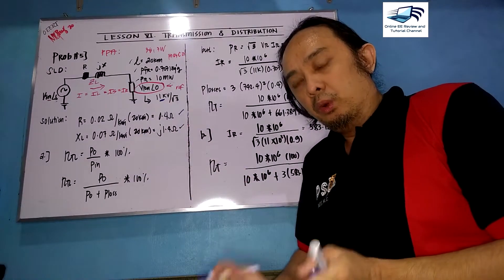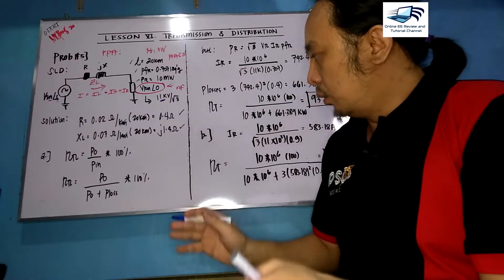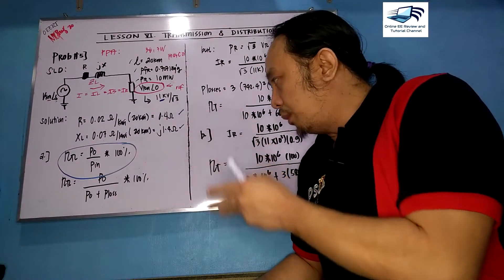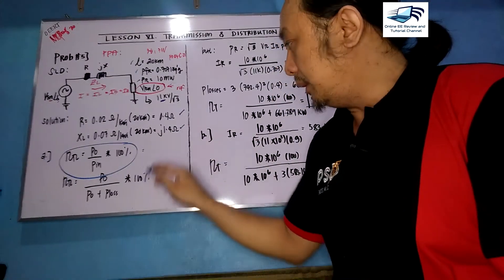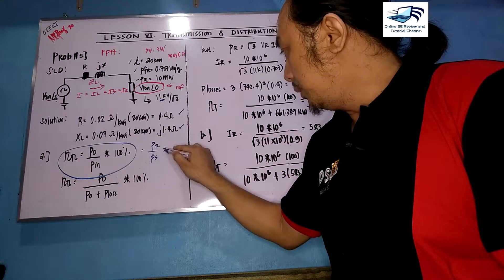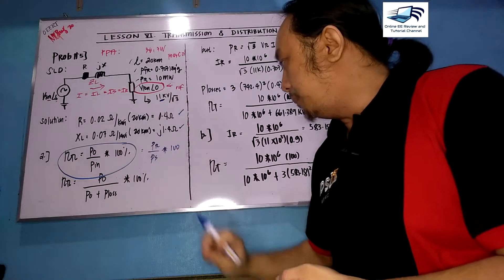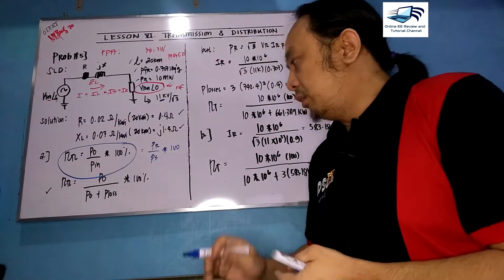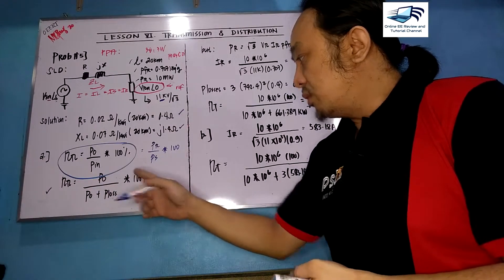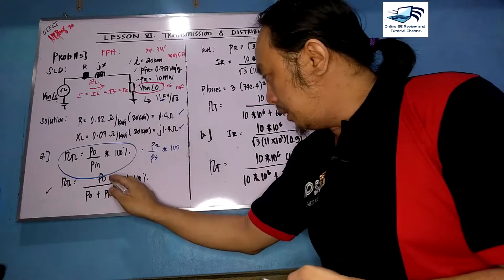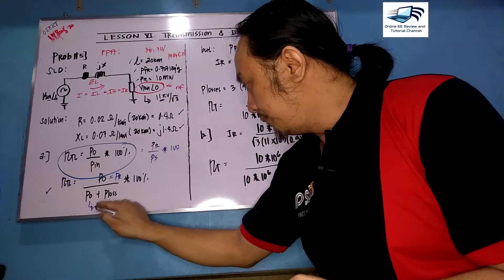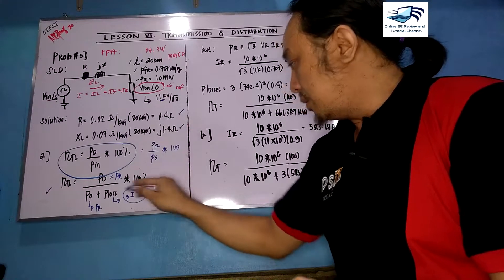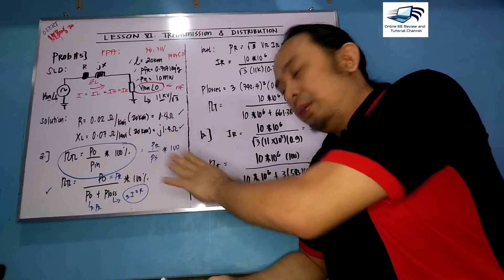So R equals 0.4 ohms and X equals 1.4 ohms. Our main goal is to get the efficiency. The efficiency equation is P_out over P_in times 100, or in transmission line parameters, PR over PS times 100 — receiving end power divided by sending end power. In terms of losses: PR over (PR plus P_losses) times 100 percent, where P_losses for a three-phase system equals 3I²R, the total line losses.